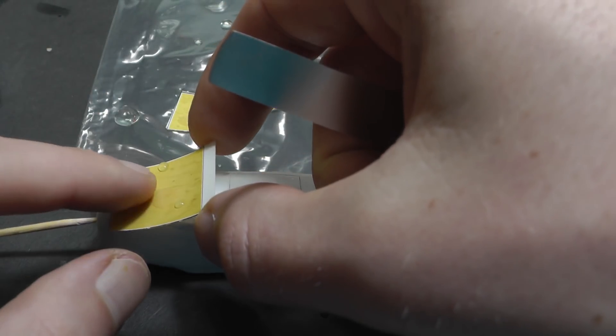Then put the decals into the water for a few minutes as you're already used to. Now the application itself. I use decal setter first. You cannot put all the decals on the model at once, because each section is a little bit larger and you must cut them to a precise size.